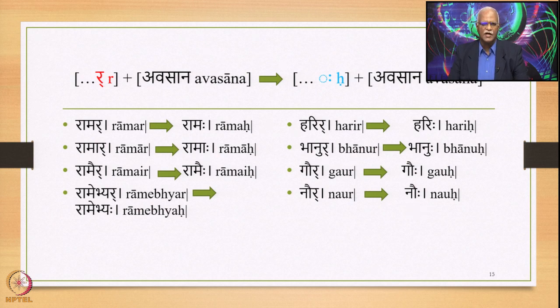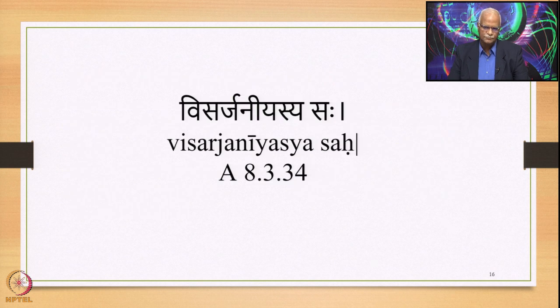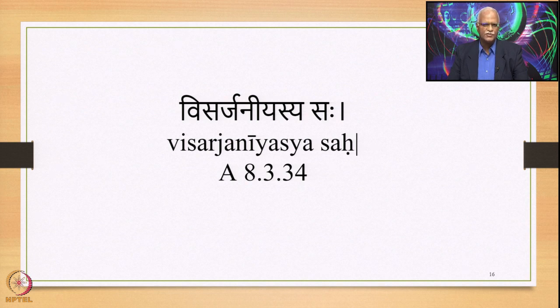This is about Kharavasanayor Visarjaniyah — the Visarjaniya comes in place of R. Now the Visarjaniya has arrived and becomes an input, and then this Visarjaniya gets substituted by various sounds — this is what is called Visarga Sandhi. The first sutra is Visarjaniyasya Saha 8.3.34. Visarjaniya is in 6/1 and Saha is in 1/1, so in place of a Visarjaniya, Sa is the substitute.